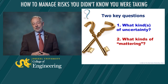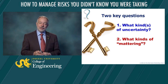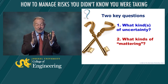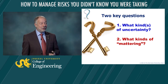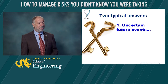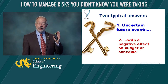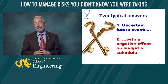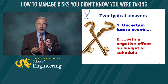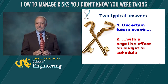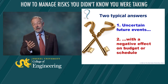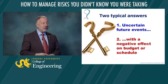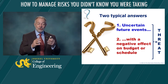When we start thinking about uncertainty that matters as an idea of risk, it raises two key questions: what kinds of uncertainty are we interested in, and how might they matter in terms of our projects? This is where the limited thinking starts to come in. For most people, when we think about answering those two questions, we think about uncertain future events that have a negative effect on our project budget or schedule. In other words, we limit our thinking of risk to threats. A threat is an uncertain future event that, if it occurs, wastes time or wastes money.